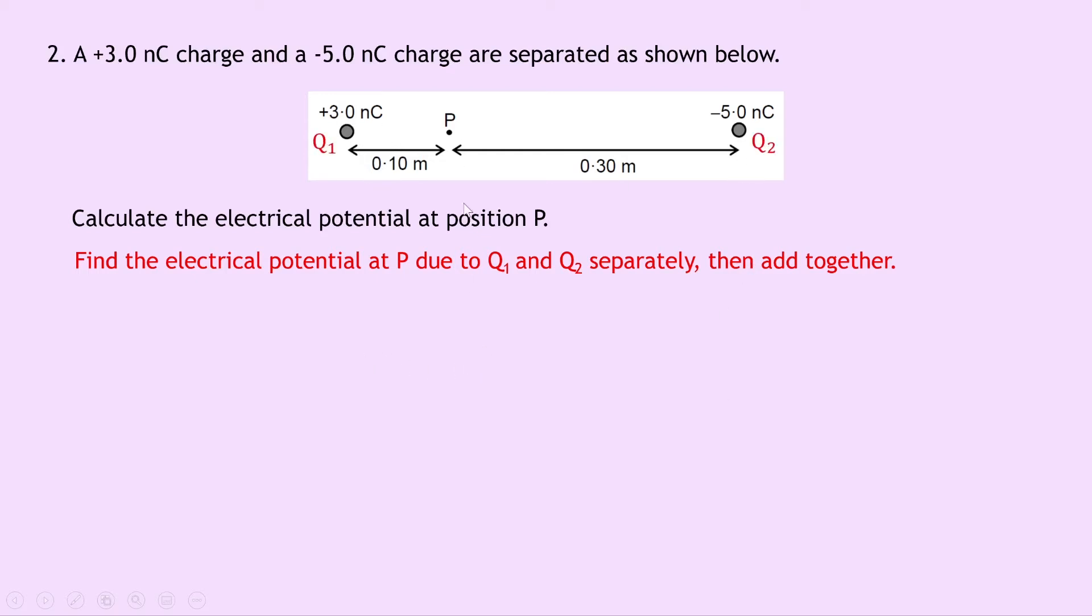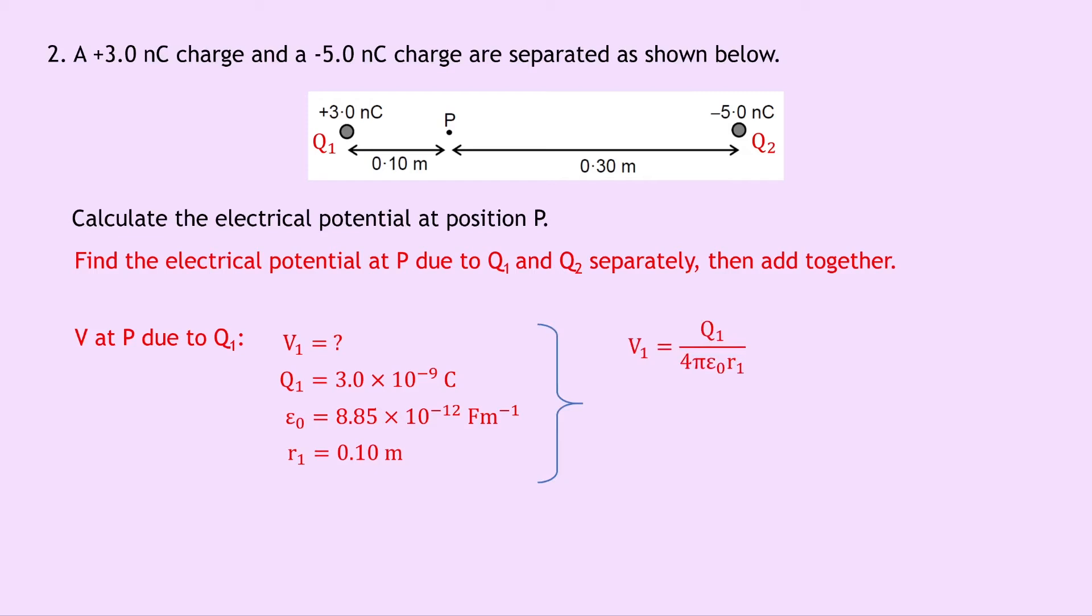Then we can find the electrical potential V at point P due to charge Q1. So if we do that, we can label the potential V1 to keep us right. And that means we have Q1 is 3 times 10 to the minus 9 coulombs, epsilon naught is 8.85 times 10 to the minus 12 farads per meter, and r1 is 0.1 meters. Writing down our equation, we have V1 equals Q1 over 4 pi epsilon naught r1. Substituting in the numbers, we get 3.0 times 10 to the minus 9 divided by 4 pi times 8.85 times 10 to the minus 12 times 0.1. And putting that into calculator should give you an answer of 269.8 volts.